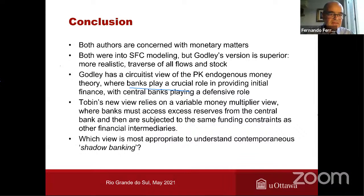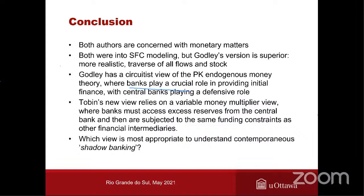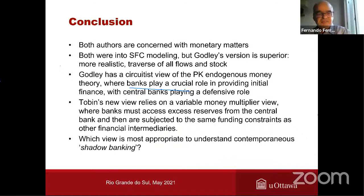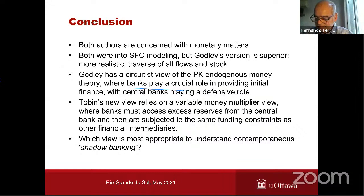In the Q&A, the first question asks what it means that according to Tobin's view banks could be a non-bank financial system. Marc replies: Tobin's argument is that all financial institutions are the same — in the end they must make sure they get the funding to be able to make credit or loans. His view is that if a bank makes a loan, it must be concerned with whether it will be able to keep the deposits automatically created with the loan. That's basically no different from a mutual fund who must first sell shares to people wanting to put their money in a money market fund.